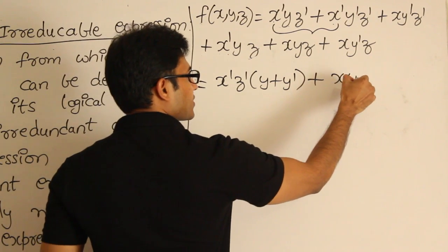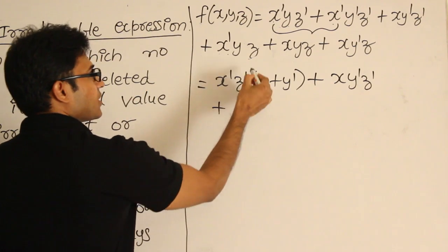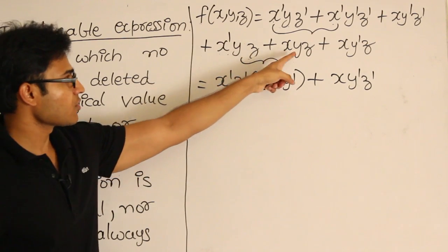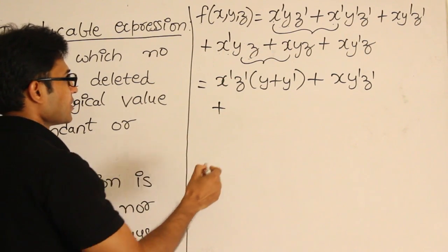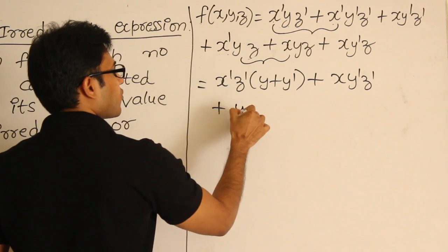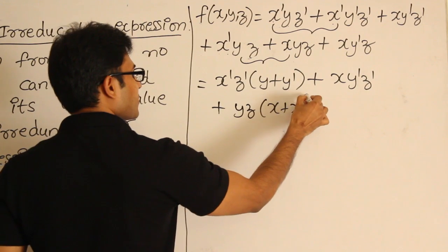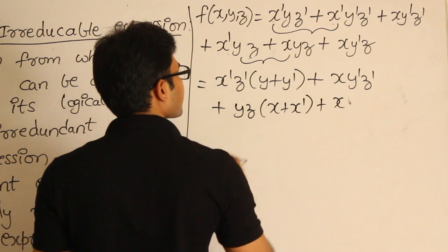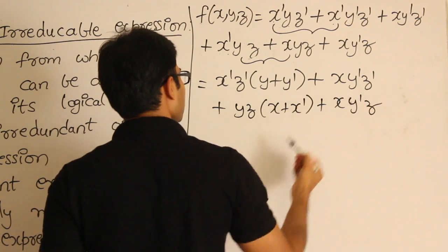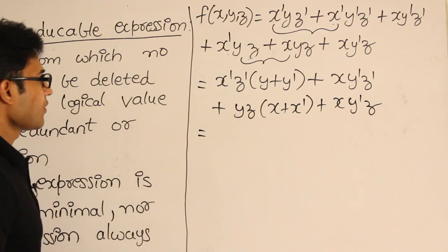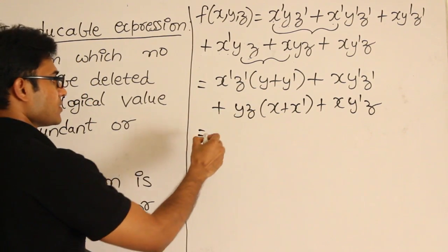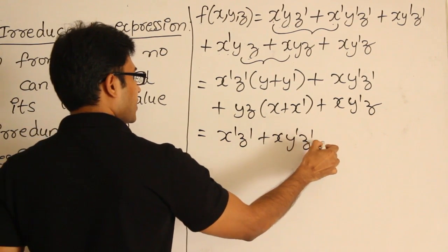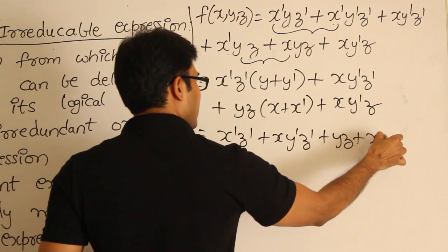Leave the next term as it is: x, y prime, z prime. Then combine these two. It is very clear that y and z are common in that and then x and x prime are remaining. If I pull out y and z, then I get x plus x prime. Then leave the next one as it is: x, y prime, z. And now we can clearly see that it is 1 and it is 1. So what we get is: x prime z prime plus x y prime z prime plus y z plus x y prime z.